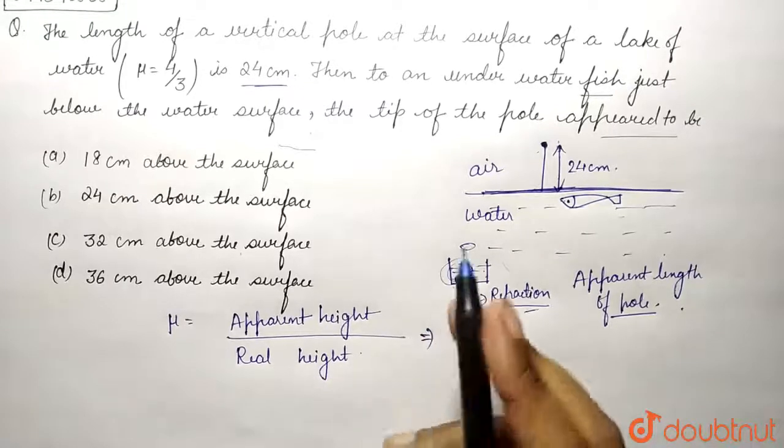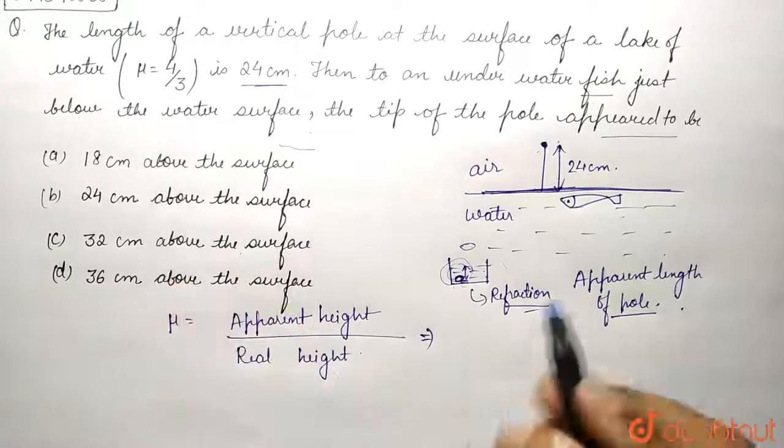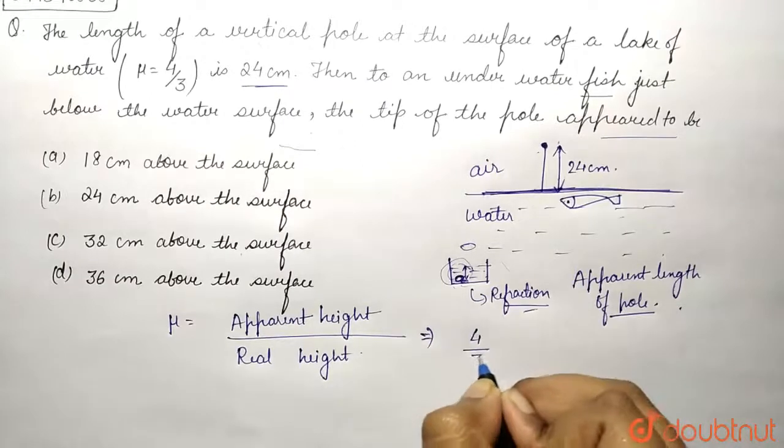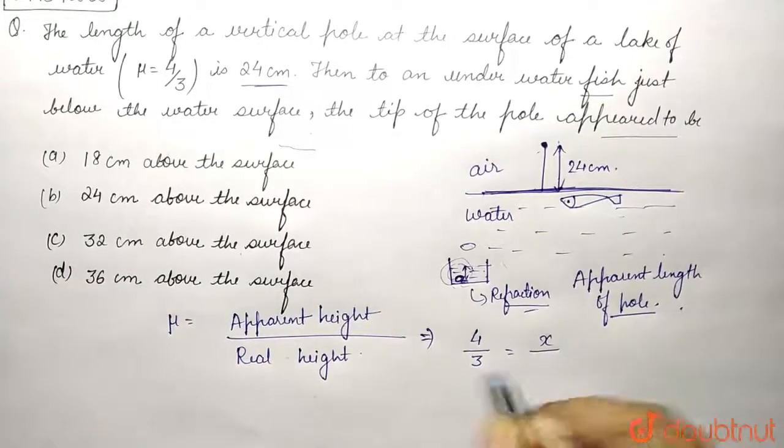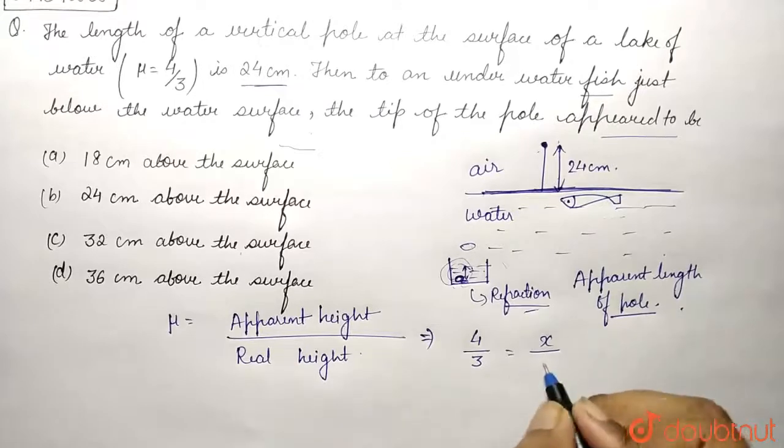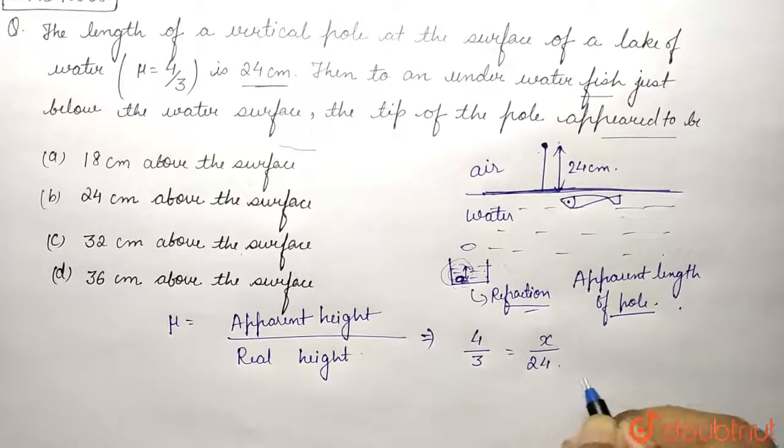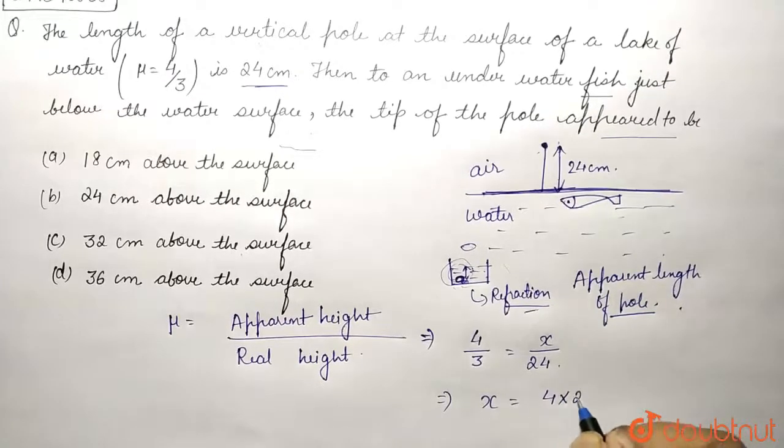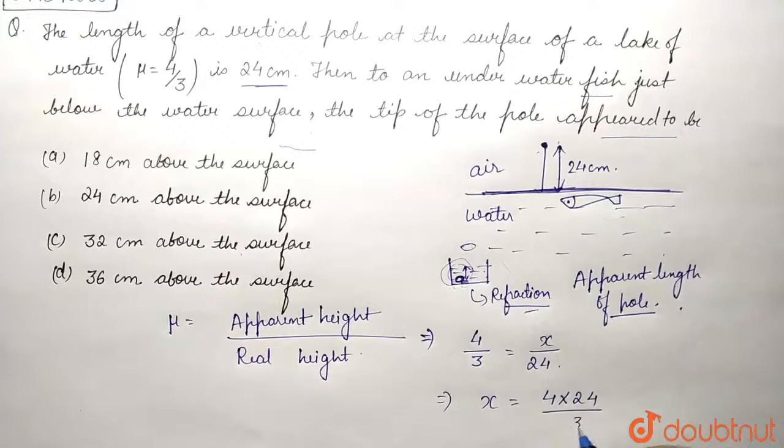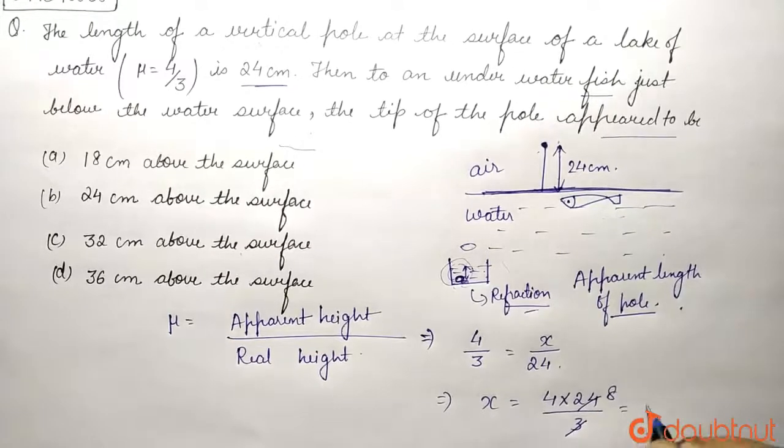Mu is the refractive index, and the refractive index of water is given to be 4 upon 3. Apparent height, let it be x, is what we need to find, and real height is equals to 24 centimeter. So we'll get x to be equals to 4 into 24 upon 3. That's 3 into 8, so x is equals to 32 centimeter.